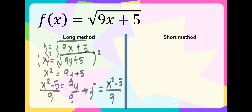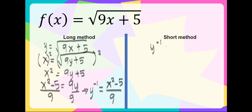Now let us use the short method to get the inverse. We have here the inverse of y is equal to x squared minus b over a, where a and b are the numerical coefficients.